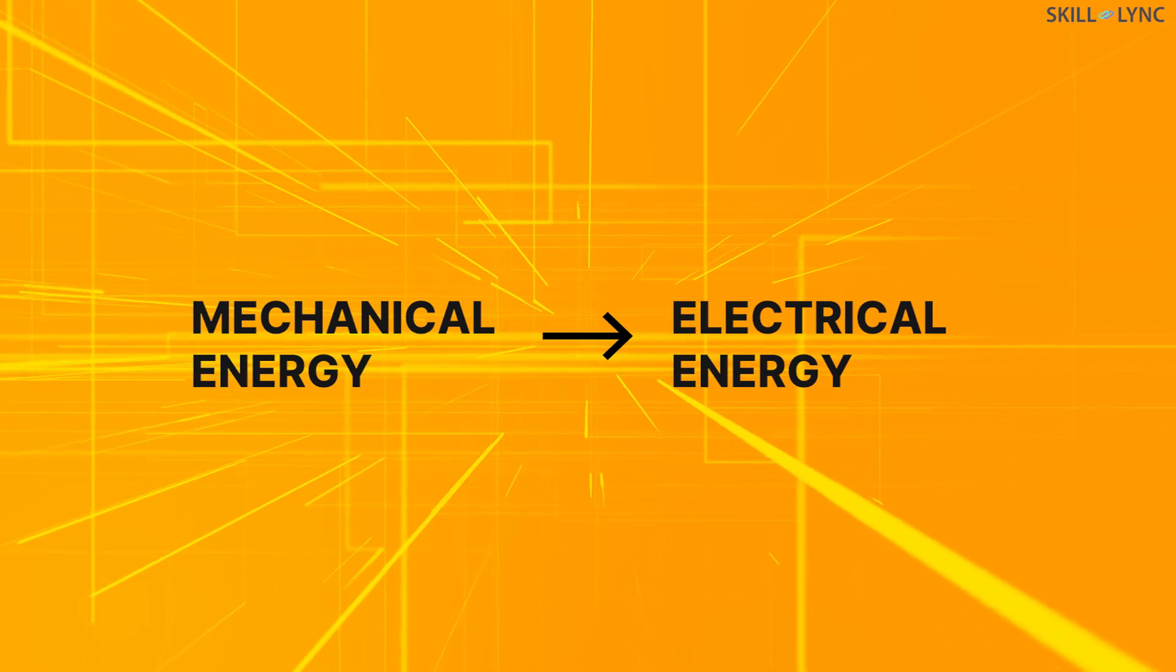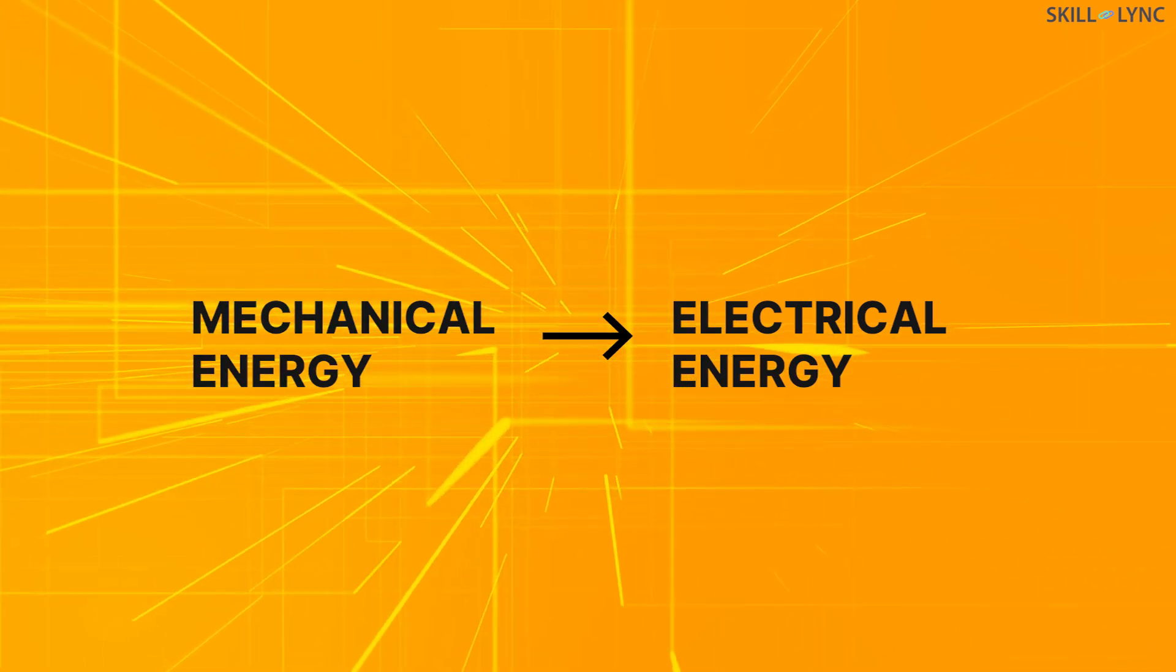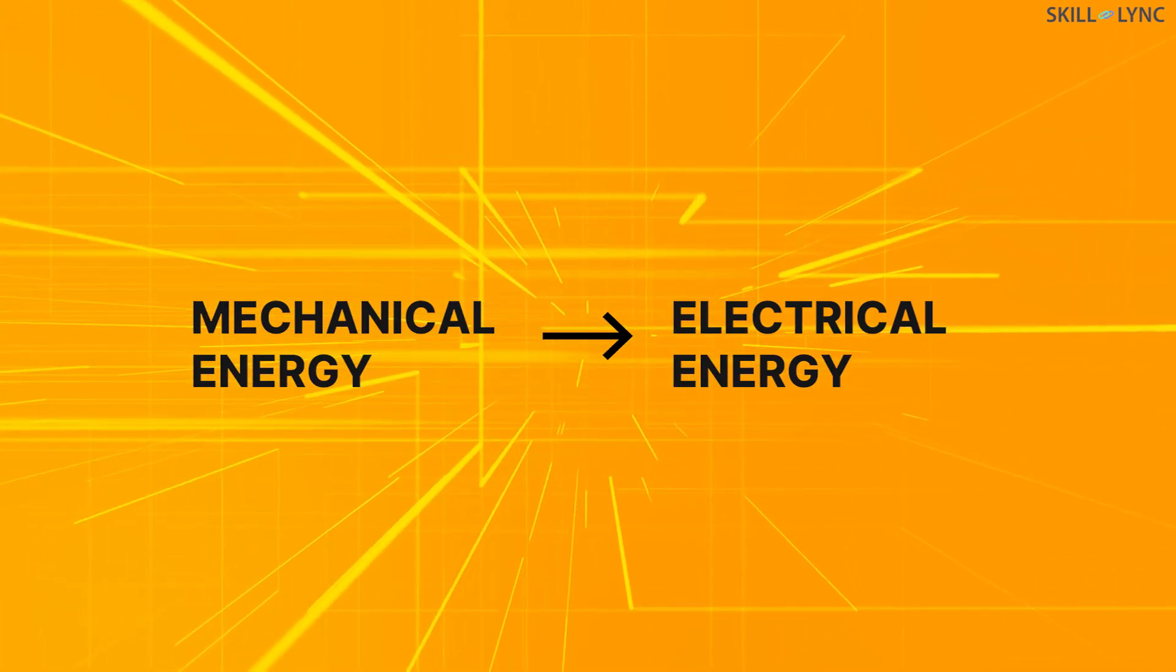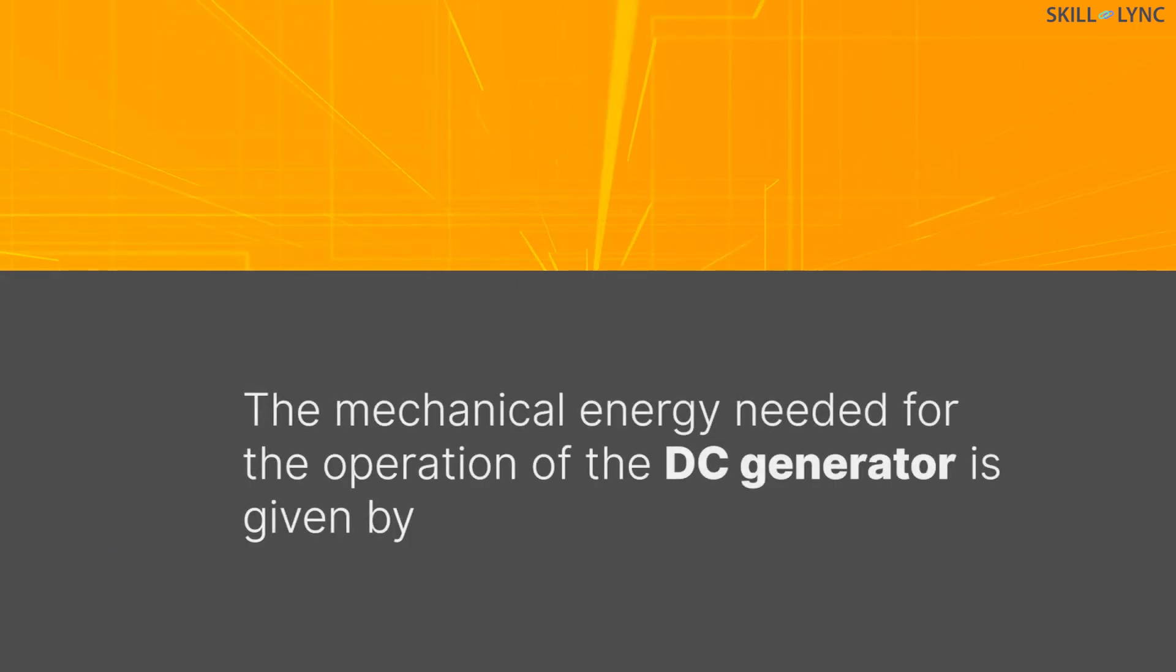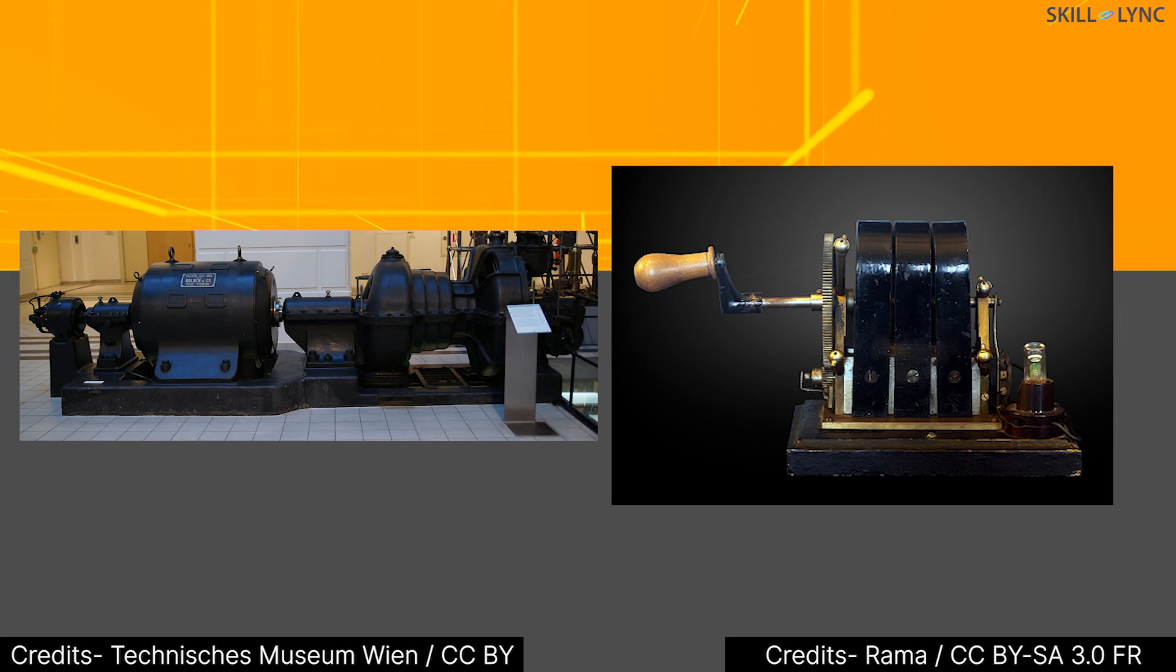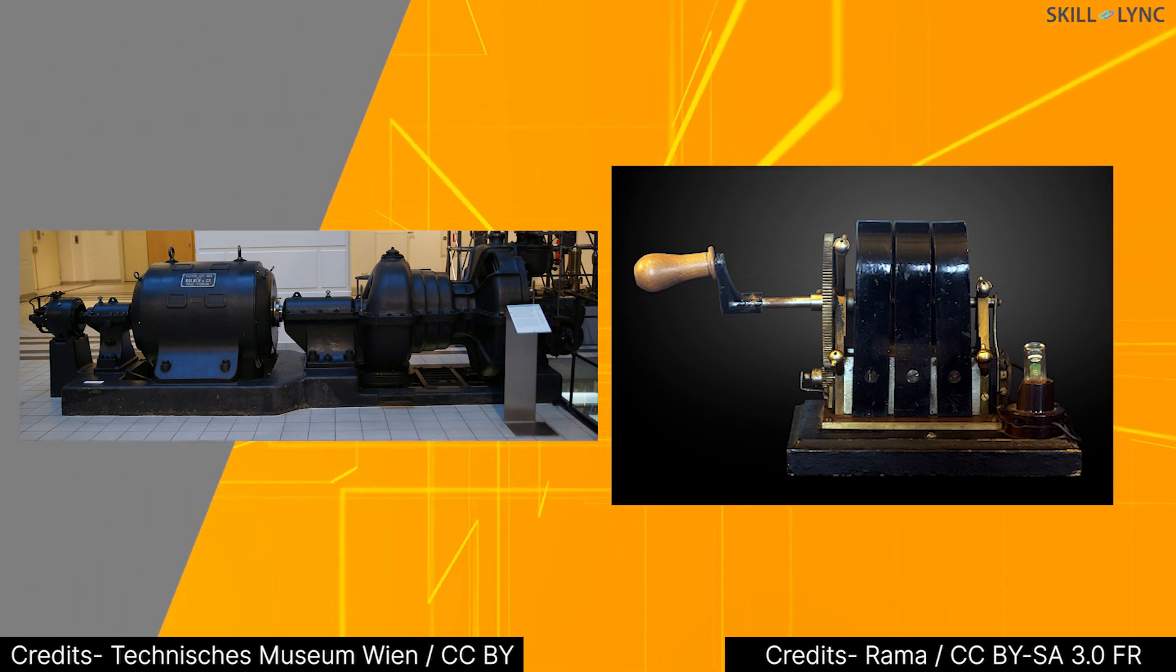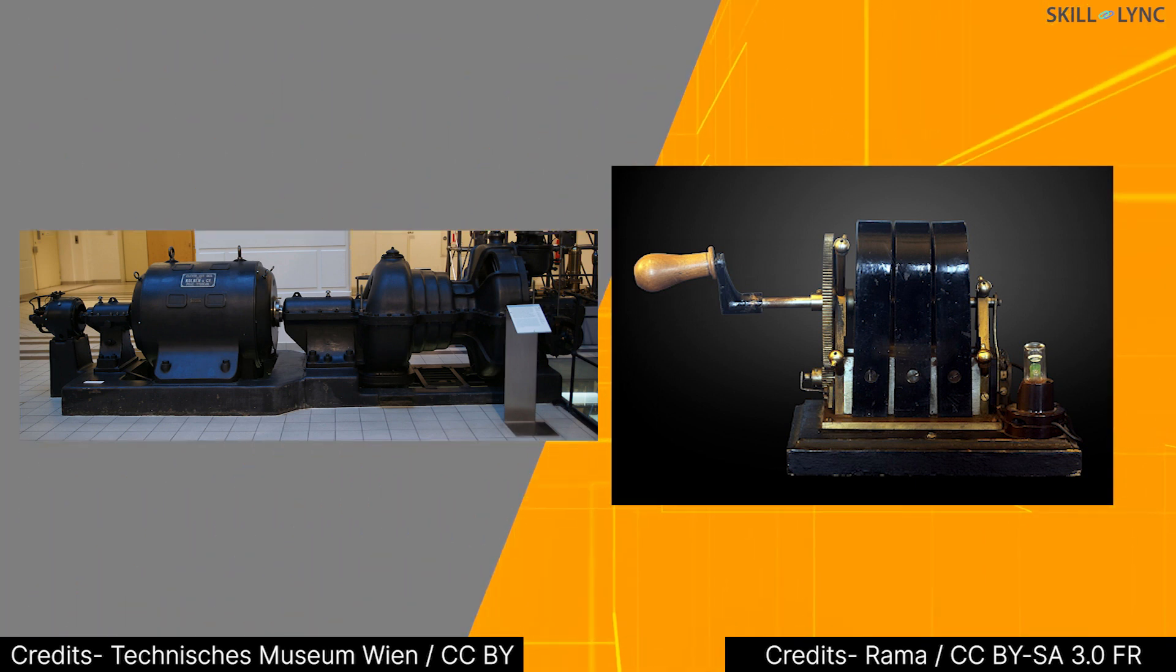A DC generator is a device that converts mechanical energy into electrical energy for use in other sources. The mechanical energy needed for the operation of the DC generator is provided by steam turbines, hand cranks, etc. They provide mechanical energy for the rotation of the rotor, which is eventually converted into electrical energy.